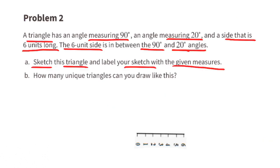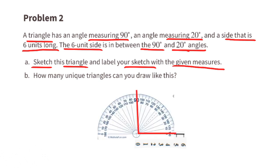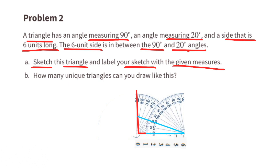Problem number two: a triangle has an angle measuring 90 degrees, an angle measuring 20 degrees, and a side that is 6 units long. The 6-unit side is in between the 90 degree and 20 degree angles. Part a: sketch this triangle and label your sketch with the given measures. Here's the 90 degree angle and here's the 20 degree angle, and the horizontal line at the bottom is the 6-unit side length between the 90 degree angle and the 20 degree angle.